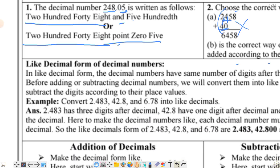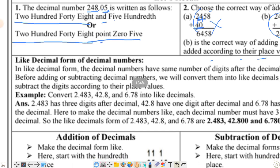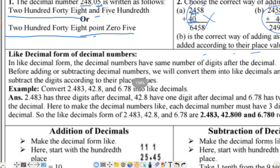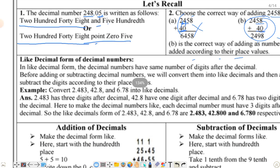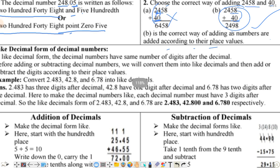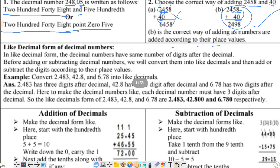अब like decimal form of decimal numbers - पहले like decimal कैसे बनाएं। Like decimal वो होता है जो कि decimal के बाद वाले numbers same होना चाहिए - decimal numbers have the same number of digits after the decimal. Before adding or subtracting decimal numbers, we will convert them into like decimals.